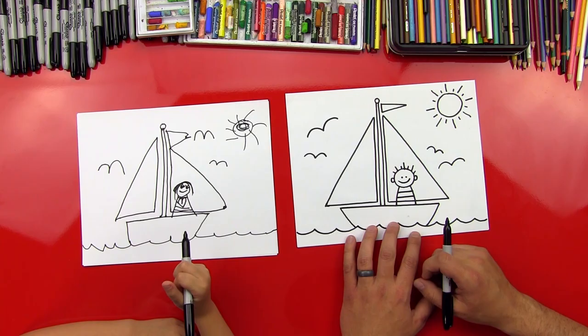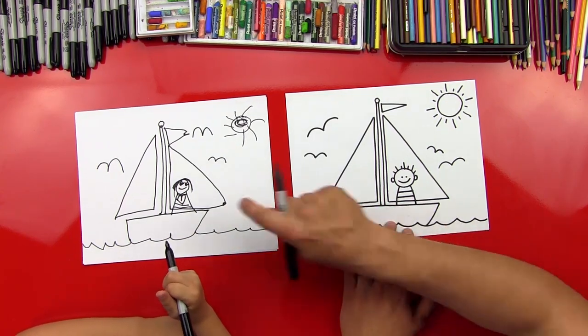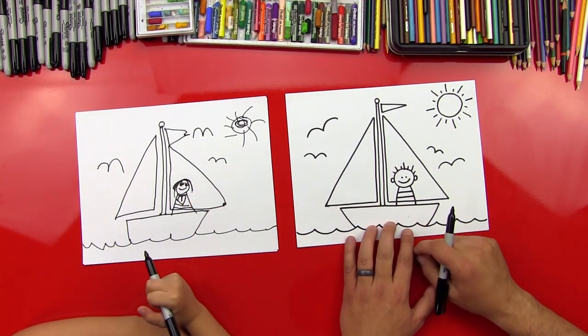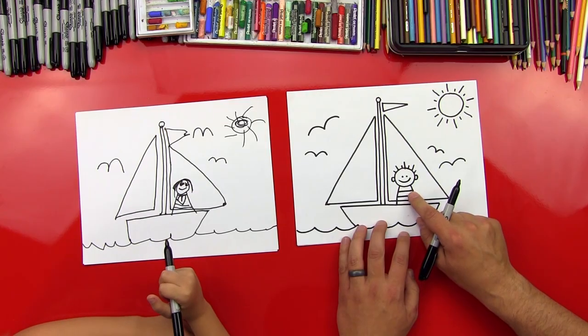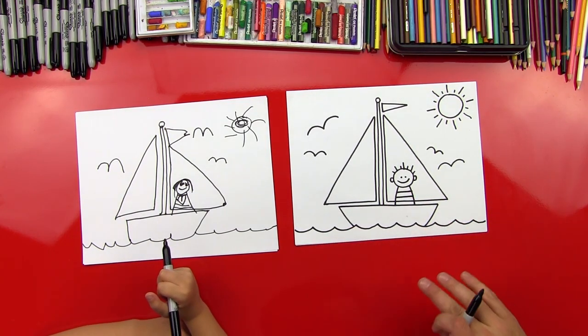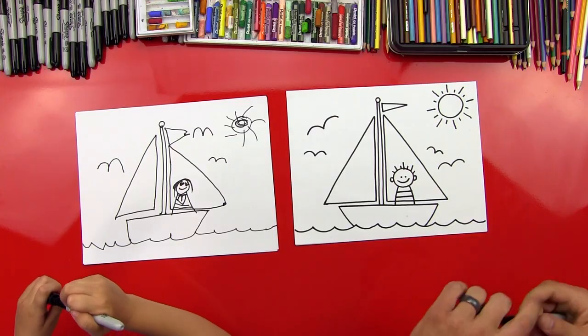And then we also put a person in ours, huh? Did you put a girl in yours? Uh-huh. I like the little heart. And I put a guy in mine. He looks like Asta Wasta, huh? Uh-huh. Yes, he does. All right, should we color it? Yeah. Okay, let's do it.